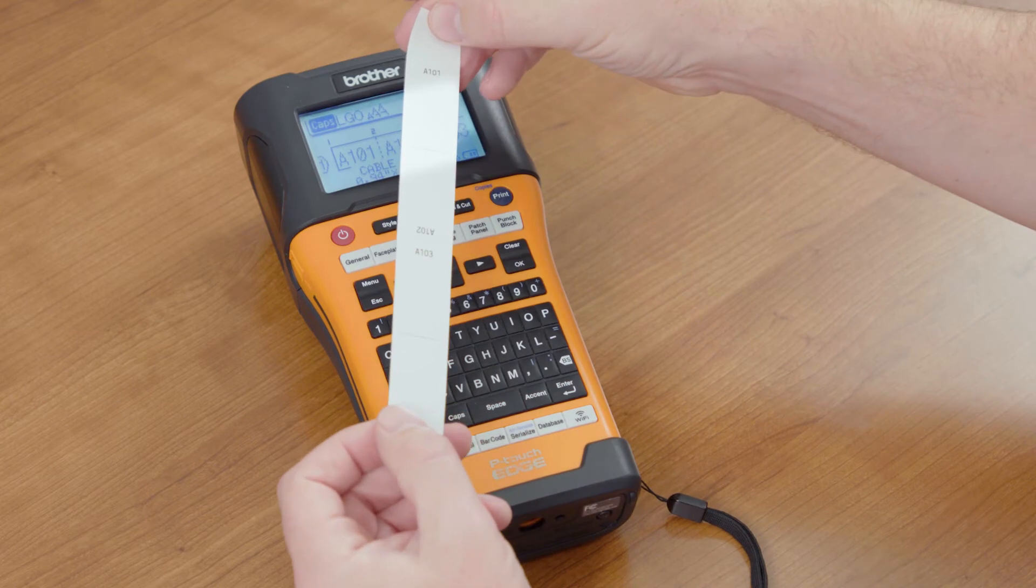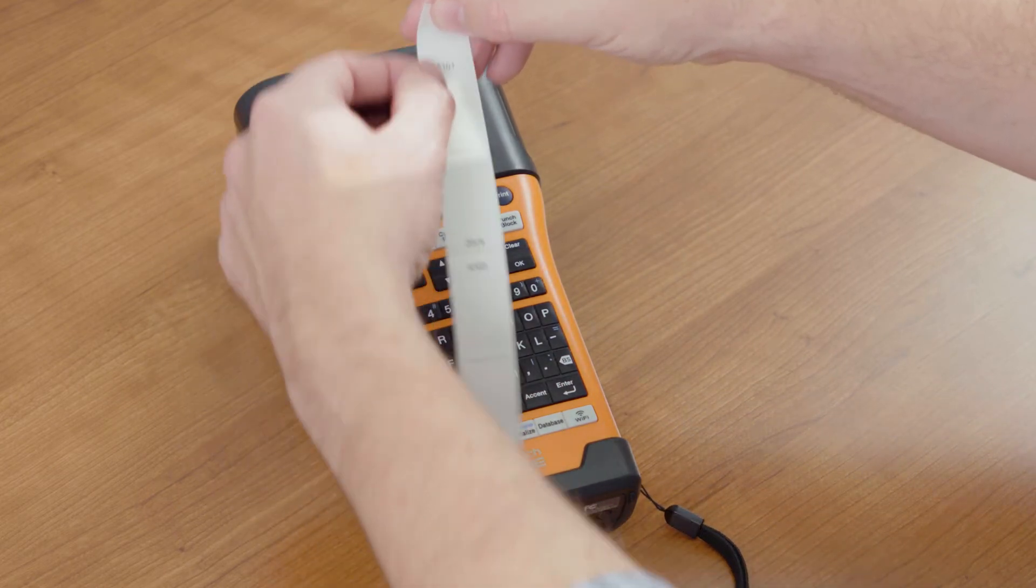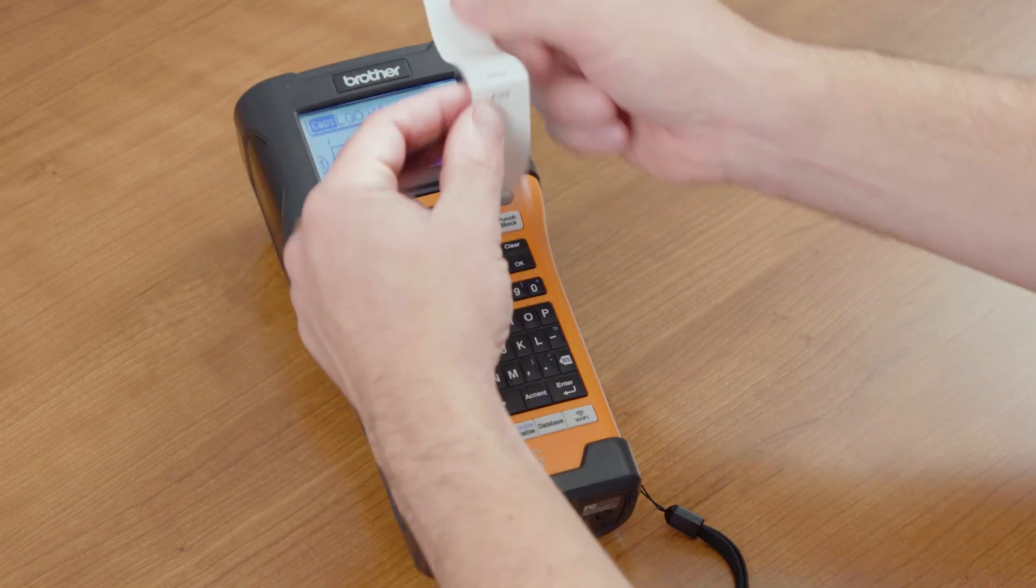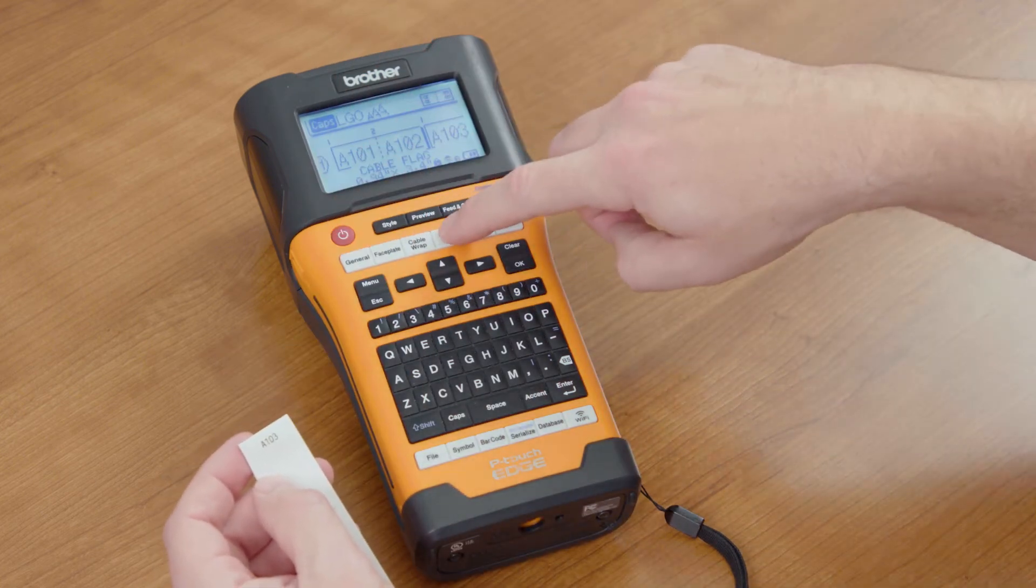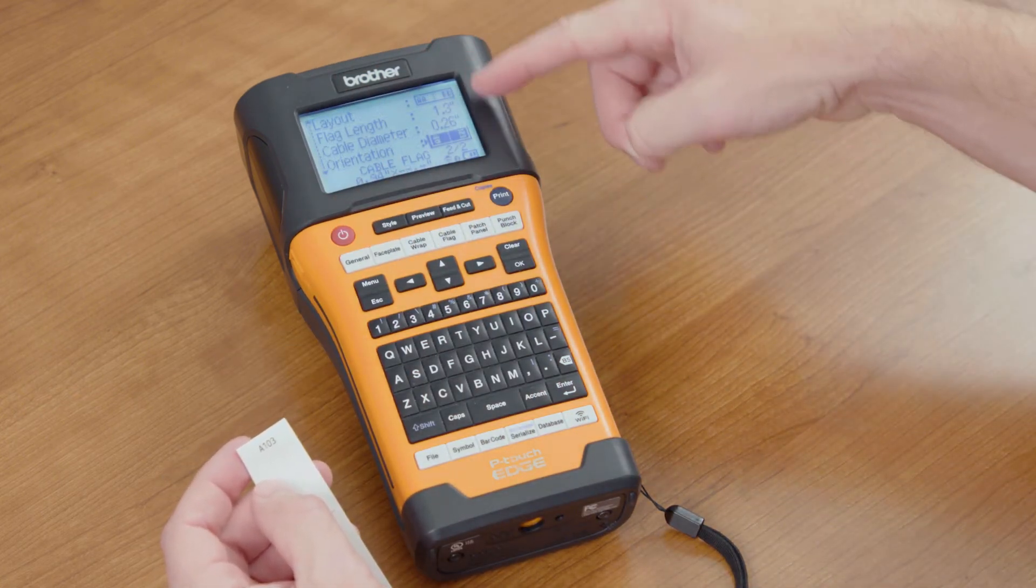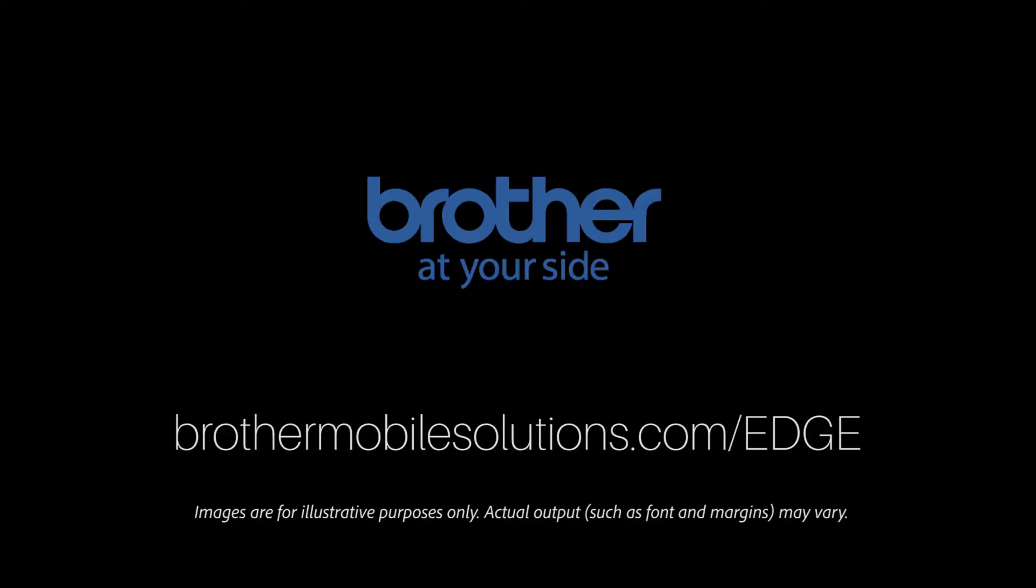And here's our cable flag. We decided we wanted different information on both sides. We told it what kind of landscape we want just by selecting the information in the cable flag layout.